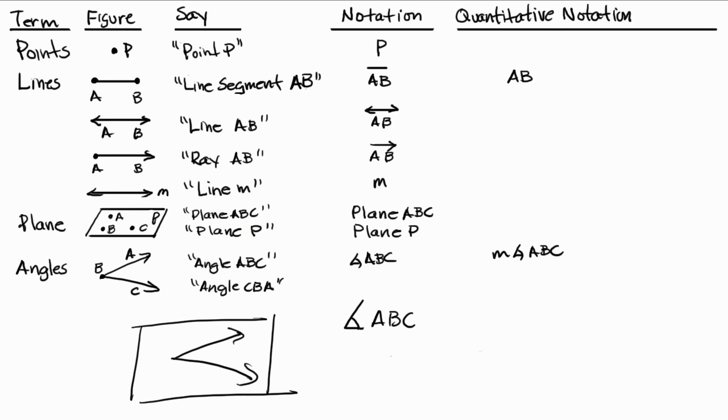And the reason why you do that is because, let's say for instance, you're referring to a particular angle here and it had 68 degrees, and it was ABC. Well, you don't just say angle ABC is equal to 68 degrees. You can't say that because angle ABC refers to a geometric figure versus a quantitative measure.